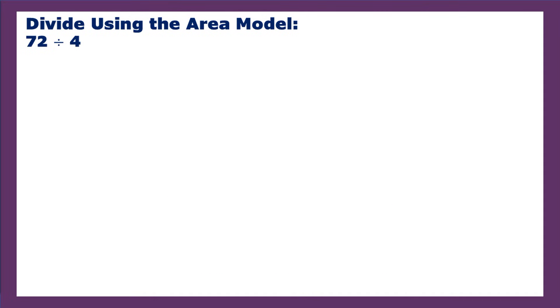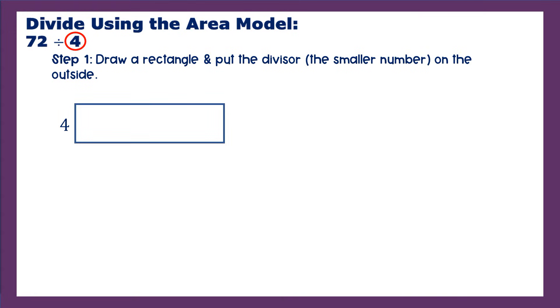We are going to divide 72 divided by 4 using the area model method. And so the first step is to draw a rectangle and you're going to put the divisor, which is always the smaller number, on the outside of this rectangle. Remember the divisor is going to be 4, the smaller number. The dividend, the thing we're dividing up, is the larger number. We're going to draw a rectangle and put 4 on the outside.